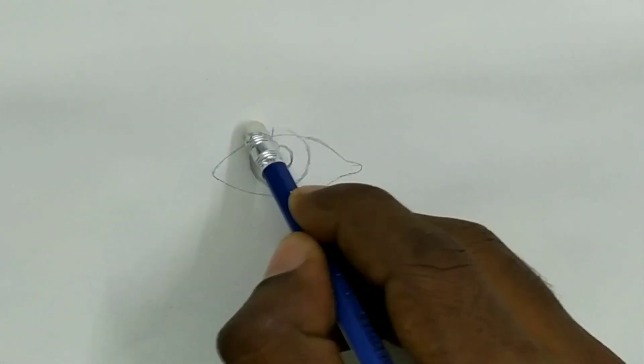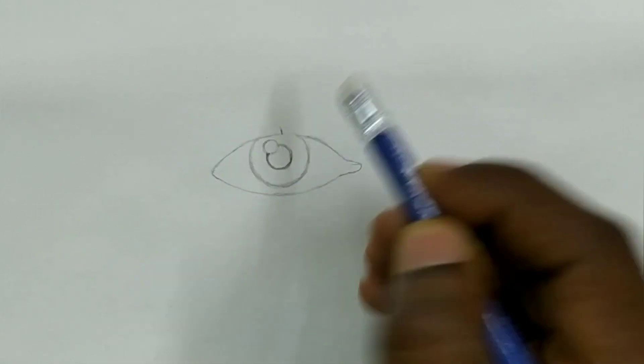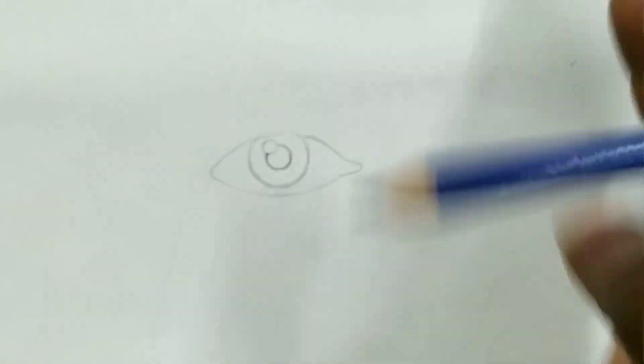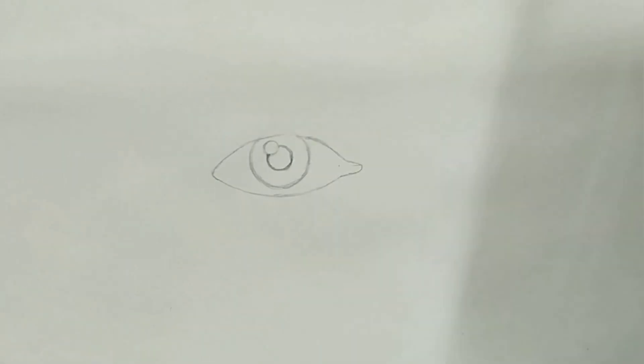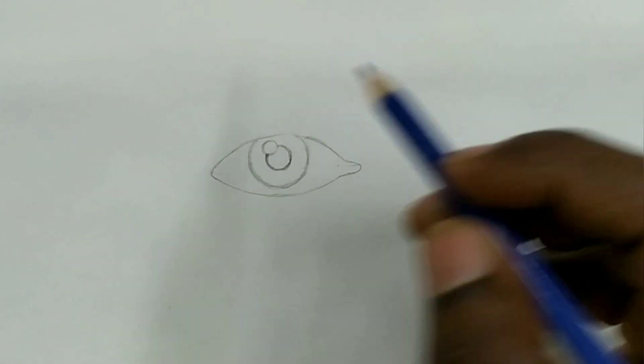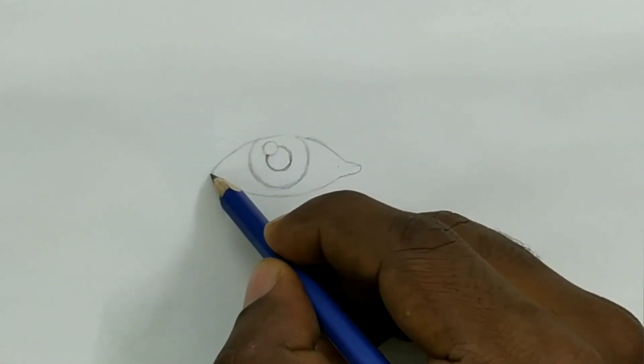Now erase the extra portion which is over the upper eyelid. Now we will give little more detail for the upper eyelid.